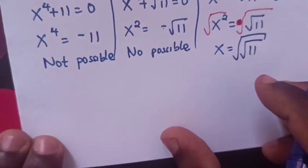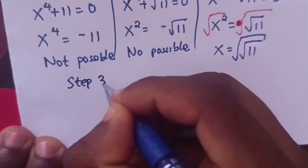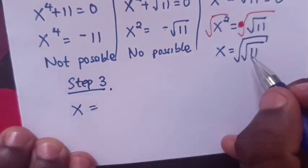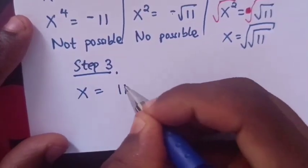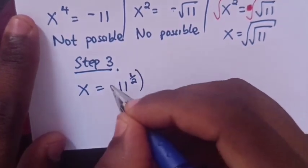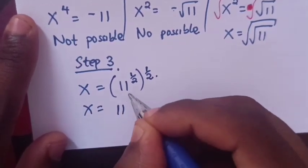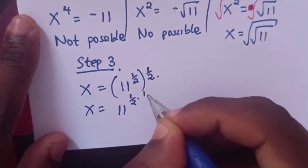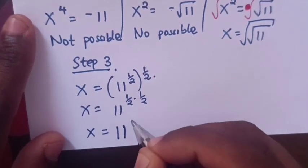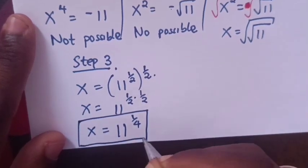Step 3. From x equals the square root of the square root of 11, and since square root equals power of one half, x equals 11 to the power of one half, times one half. So x equals 11 to the power of one quarter. This is the value of x.